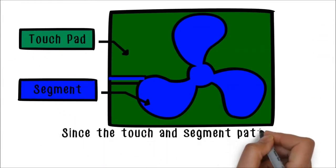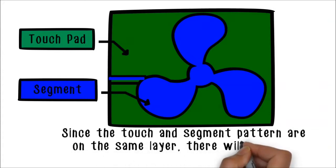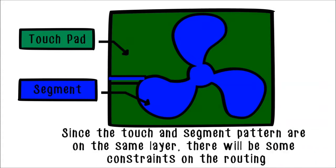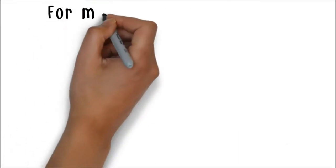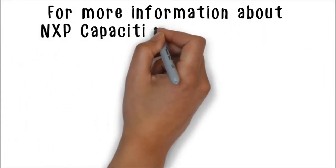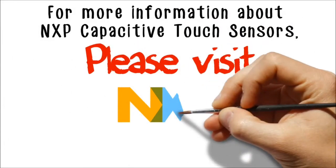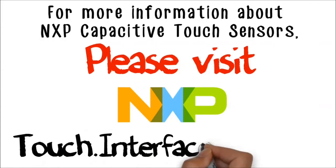Since the touch and segment pattern are on the same layer, there will be some constraints on the routing. Therefore, the number of touch keys will be limited. For more information about NXP capacitive touch sensors, please visit touch.interfacechips.com.